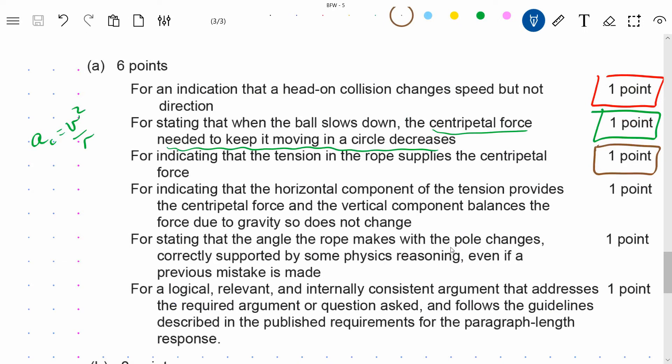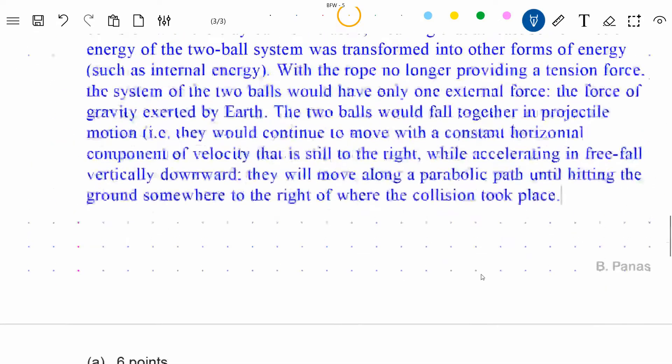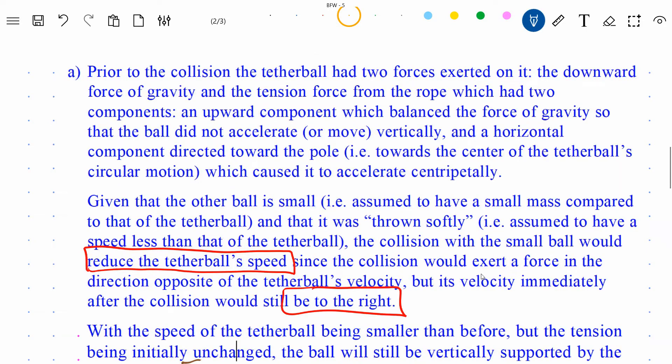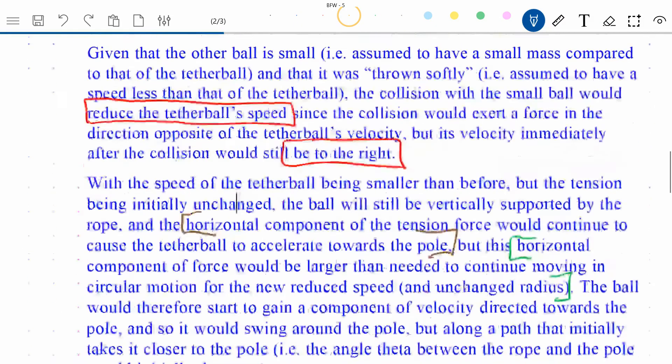And moving on to the fourth point, I guess. Fourth point for indicating that the horizontal component of the tension provides the centripetal force. So it's kind of redundant. I'm not sure that was on purpose or not, but we've already kind of indicated that. And the vertical component balances the force due to gravity. So the vertical component of tension is why it's not falling, in effect. So I've got that in here. The force of tension had an upward component which balanced the force of gravity. So that point is earned.